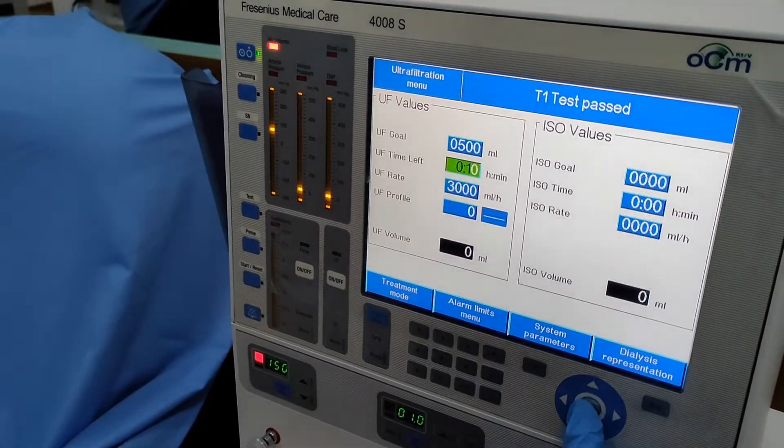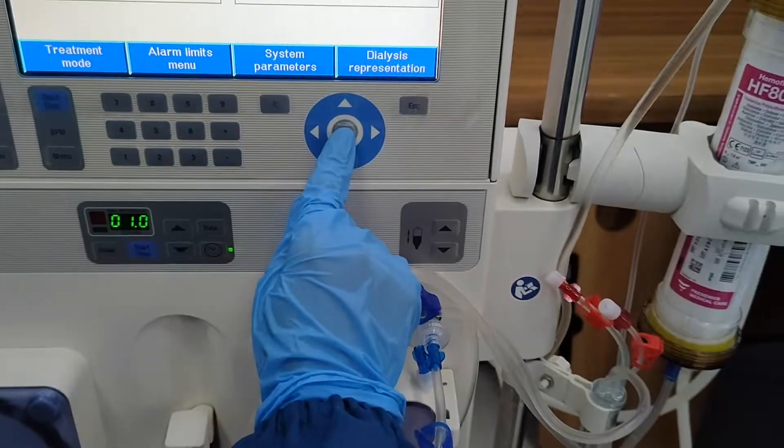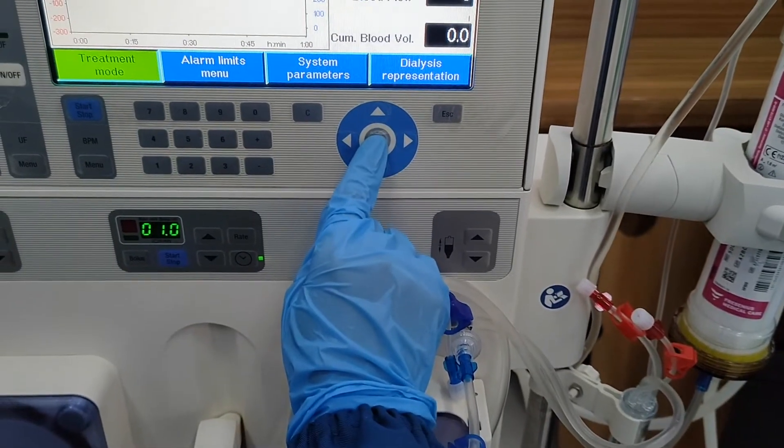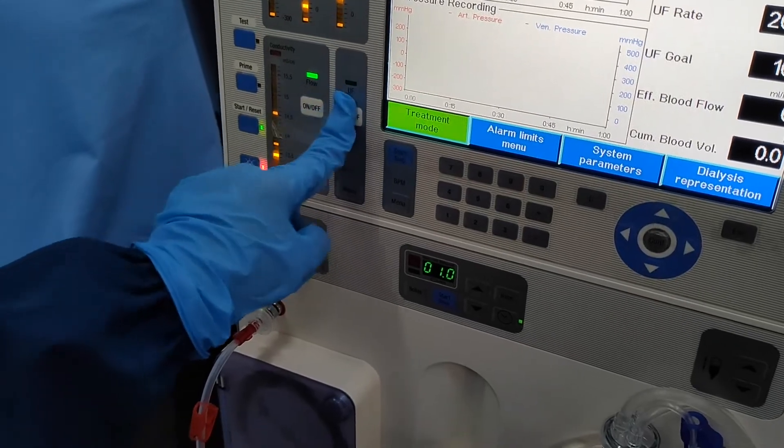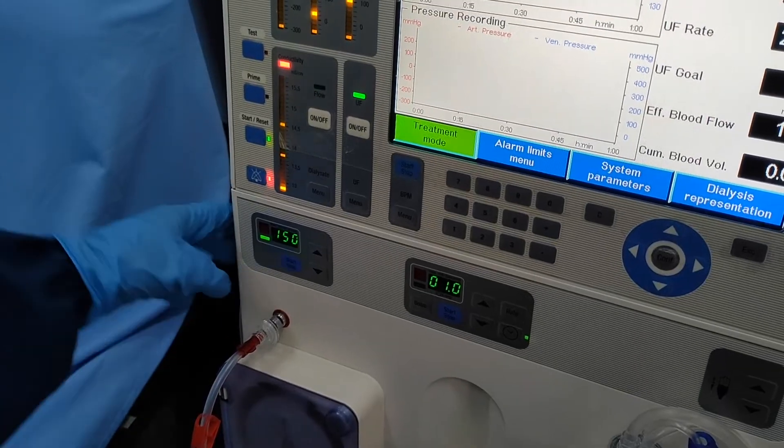Unclamp both lines, press confirm, turn on the UF and flow, press start button, and increase the BFR to 250.